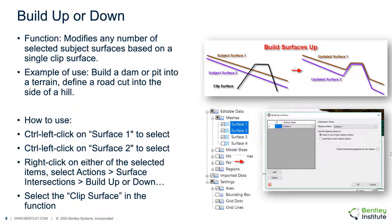The user may utilize this functionality by selecting two or more surfaces to build up, then right-clicking and selecting Actions, Surface Intersections, Build Up or Down. In the dialog that appears, the user can select the clipping surface to be utilized. The result is that a new surface will be created for each of the modified surfaces, while the original surfaces remain unchanged.